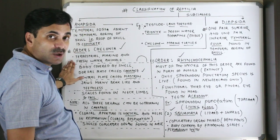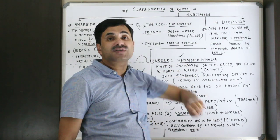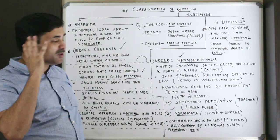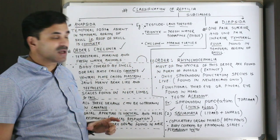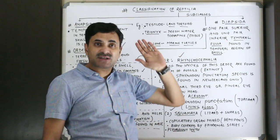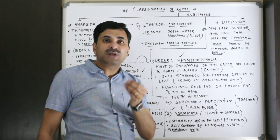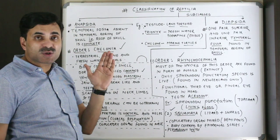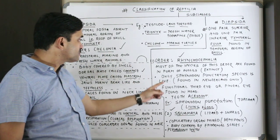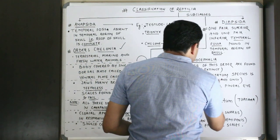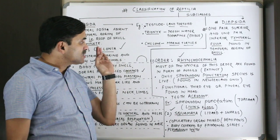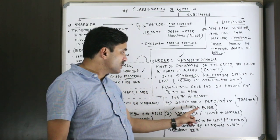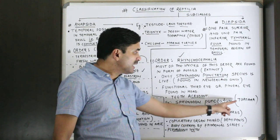Coming to the orders of Diapsida. Order Rhynchocephalia: most species of this order have been found extinct, known only from fossils. Only one species is still living — Sphenodon punctatum — which is found only in New Zealand.